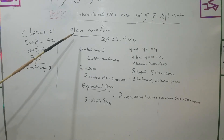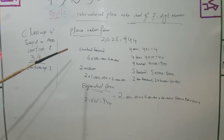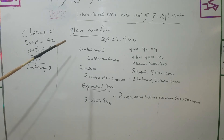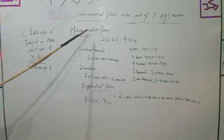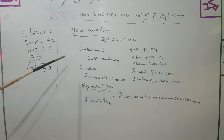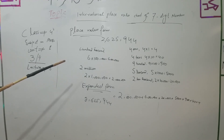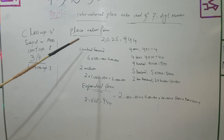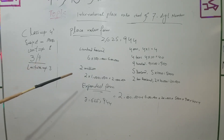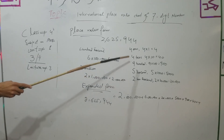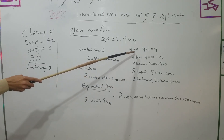Now we will write the number in place value form. In place value form we write each digit multiplied by its place value. The place values are: ones, tens, hundreds, thousands, ten thousands, hundred thousands, and million.